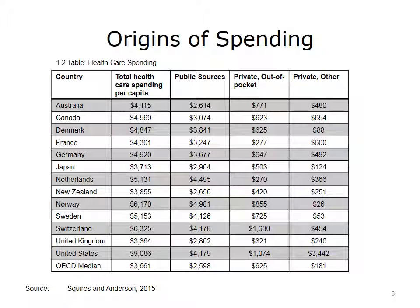Looking further into this data, some interesting questions are: where does that spending come from — individuals, the government, or employers? Comparing the U.S. to the 13 other countries surveyed, our public spending — what the government spends per capita — is the second highest in the world. For out-of-pocket costs, or what individuals spend on health care, the U.S. is also the second highest. The other costs column, covering what insurance companies spend, is more than five times what the cost is in Canada, the next highest.